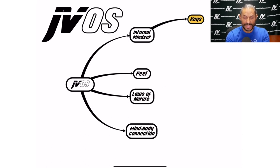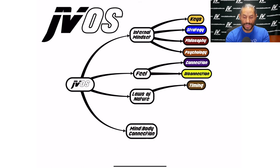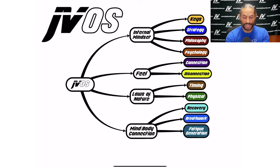So within the internal mindset we have keys to the kingdom, strategical tools, philosophical tools, psychological tools. Under the feel we have connection and disconnection. Under the laws of nature we have timing and physical. Under mind and body connection we have recovery, breath work, fatigue generation, behavior generation, and mind work.